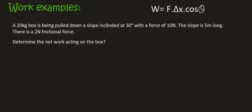Hello everyone. So here we're going to do another question with work. I'm doing a lot of examples because you can really get some high marks in the exams if you understand this concept. So here we have a 20 kilogram box which is being pulled down a slope inclined at 30 degrees with a force of 10 newtons. The slope is 5 meters long and there is a 2 newton frictional force. Determine the net work acting on the box.